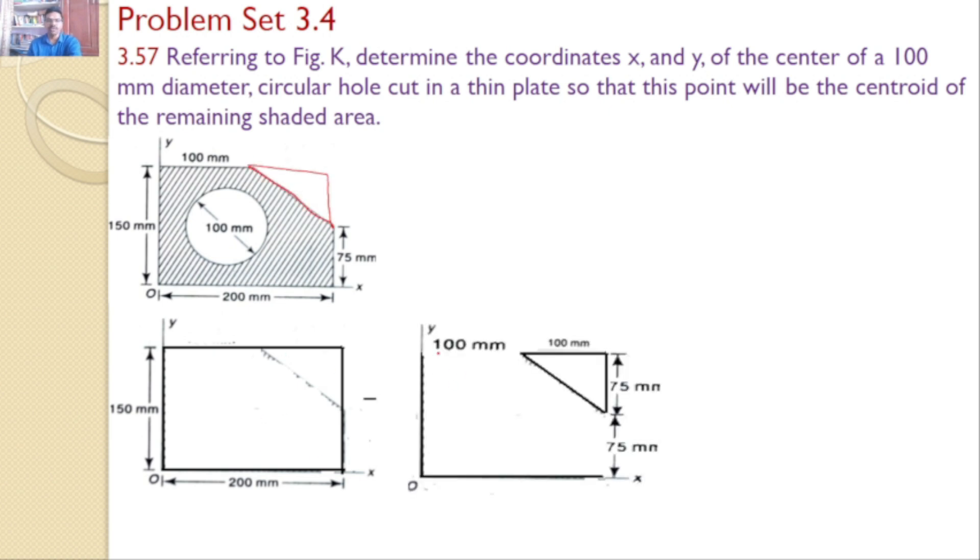This triangle which is at a distance of 100 mm from y-axis and 75 mm from x-axis, minus this circle that is 100 mm diameter. So this we will analyze.